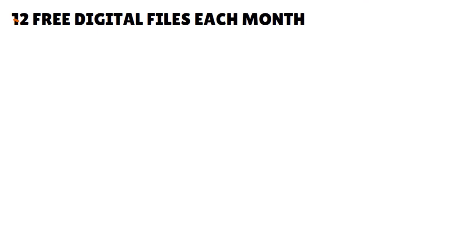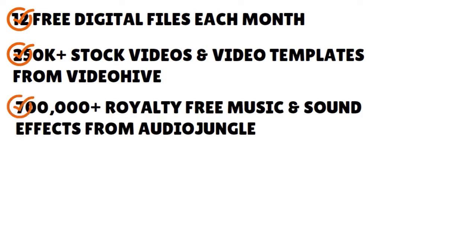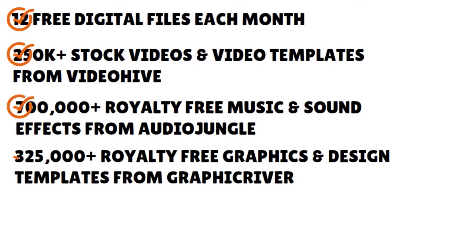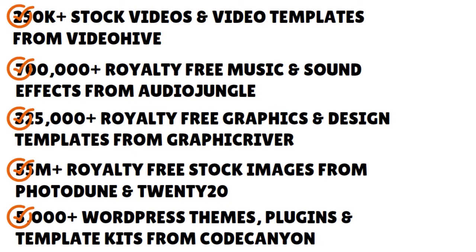In addition to 12 free digital files each month, you get access to more than 250,000 stock videos and video templates from VideoHive, 700,000 royalty-free music and sound effects from AudioJungle, more than 325,000 royalty-free graphics and design templates from GraphicRiver, more than 55 million royalty-free stock images from PhotoDune, and more than 5,000 WordPress themes, plugins, and template kits from CodeCanyon.